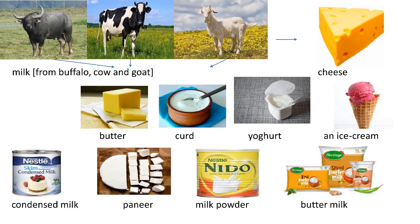We get milk from buffalo, cow and goat. From milk, we make cheese, butter, curd, yogurt, ice cream, condensed milk, paneer, milk powder and buttermilk.